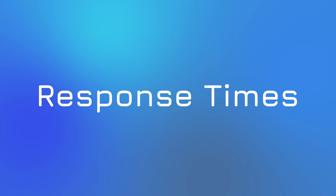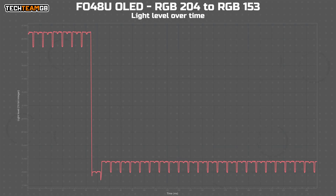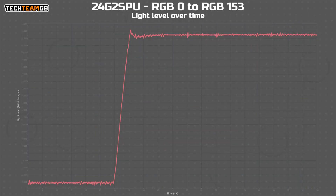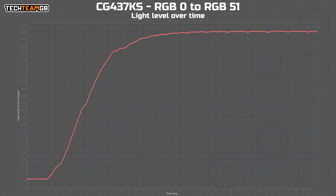Starting with response times, OLED easily takes the cake here, capable of switching its pixels on and off in under one millisecond, making it functionally instant. They can have some rather strange behaviour though, but on the whole they are lightning fast. Mini LED on its own should be the same as OLED, although in the more conventional style is near instant for full black to any shade of white or grey with local dimming enabled, but is otherwise functionally the same as whatever panel it gets attached to, normally IPS. The same goes for Quantum Dot, where again it mostly gets used on IPS panels, and so generally sits in the same category as them. TN is generally the next fastest, followed generally speaking by IPS, and then VA.